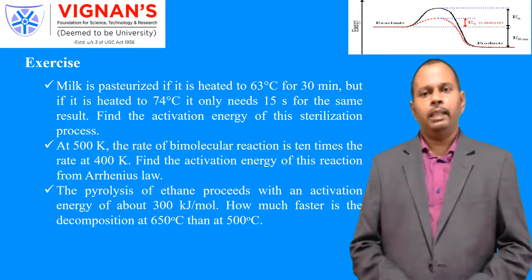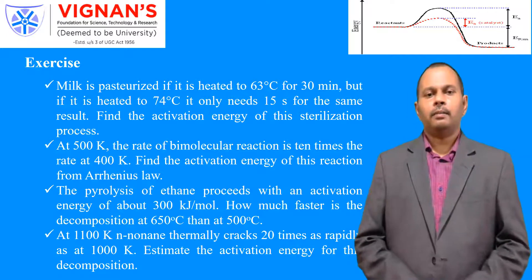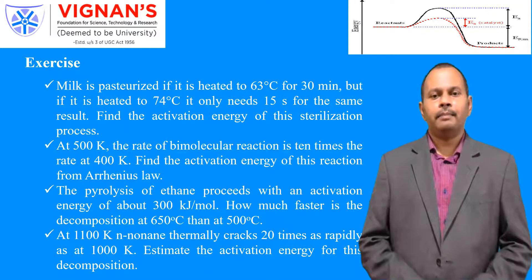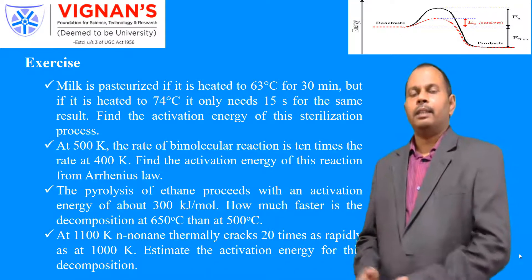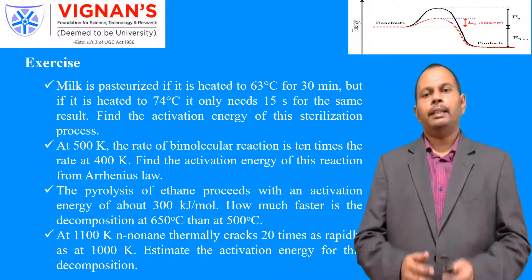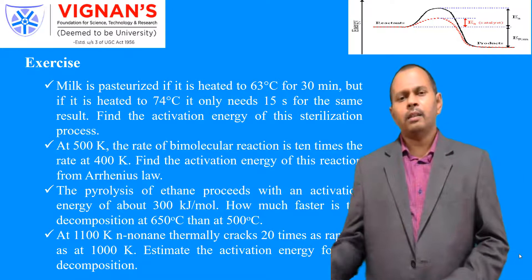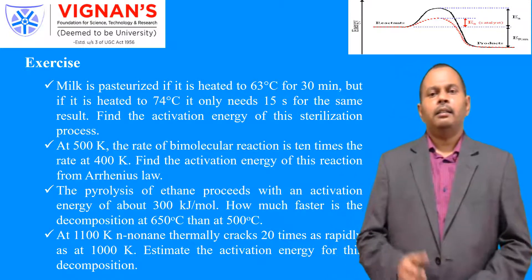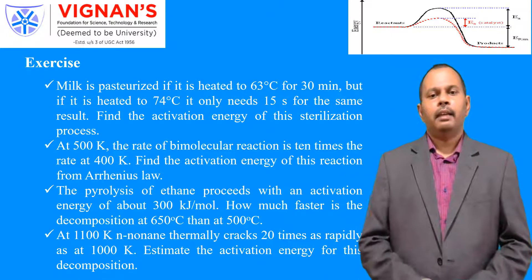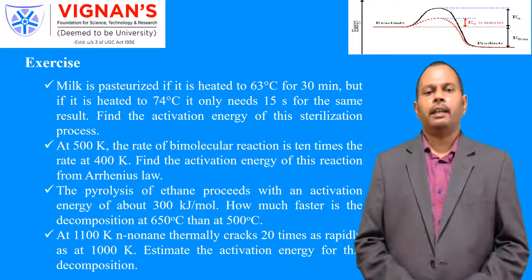In all these problems, remember to convert temperature from degrees centigrade to Kelvin, because R = 8.314 J/mol·K is in terms of Kelvin. Problem 4: At 1100 K, n-nonene thermally cracks 20 times as rapidly as at 1000 K. Find the activation energy for this reaction. Given T2 = 1100 K, T1 = 1000 K, and K2 = 20 × K1. Use the Arrhenius formula to find the activation energy.